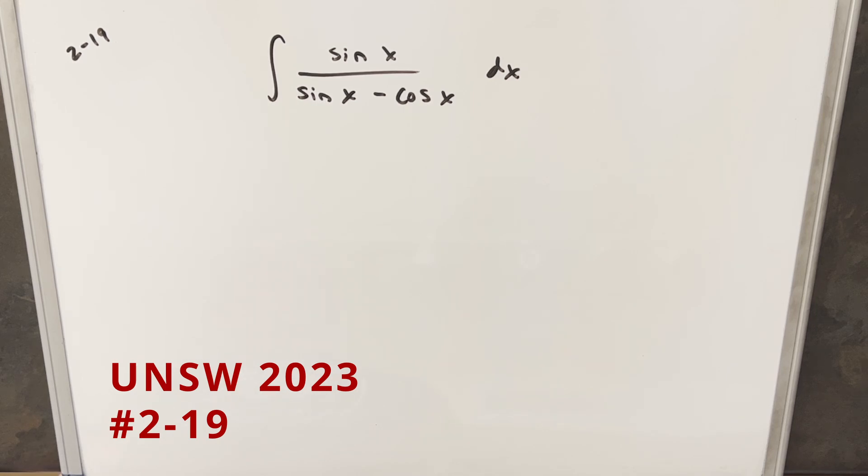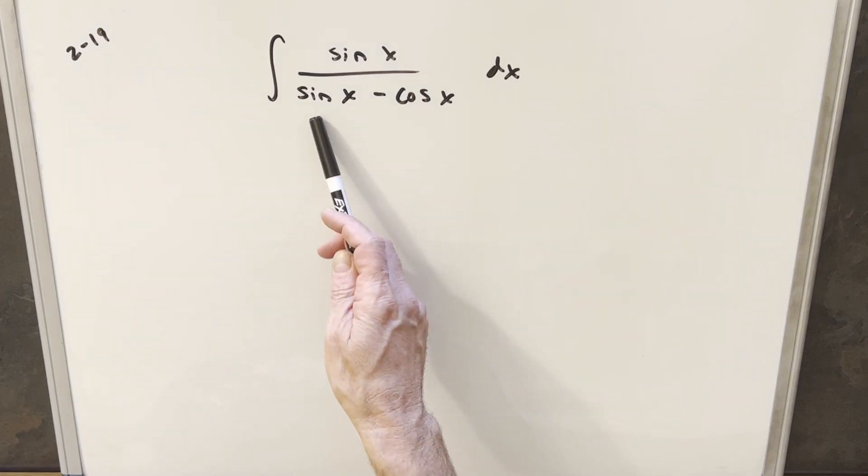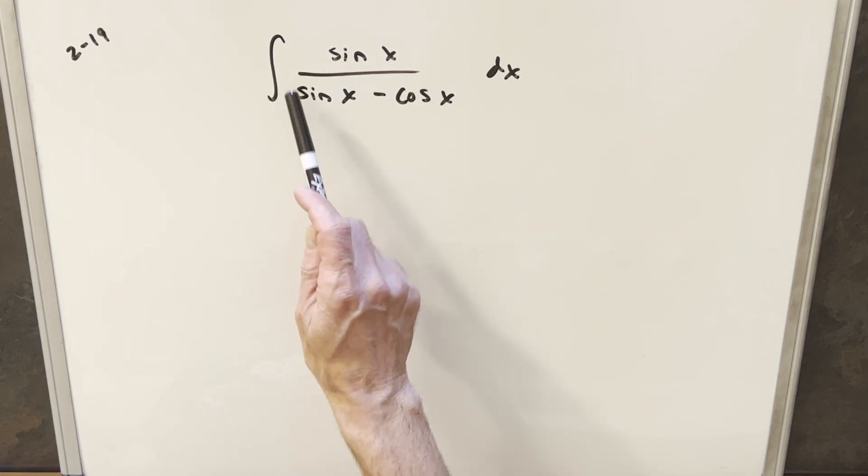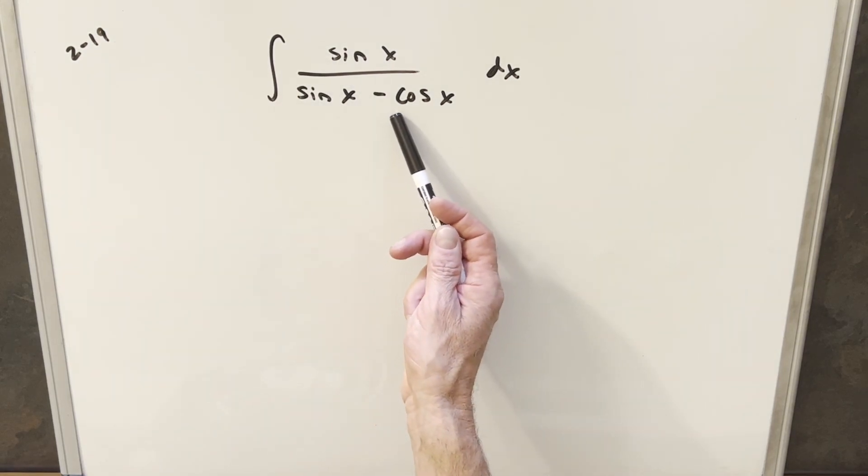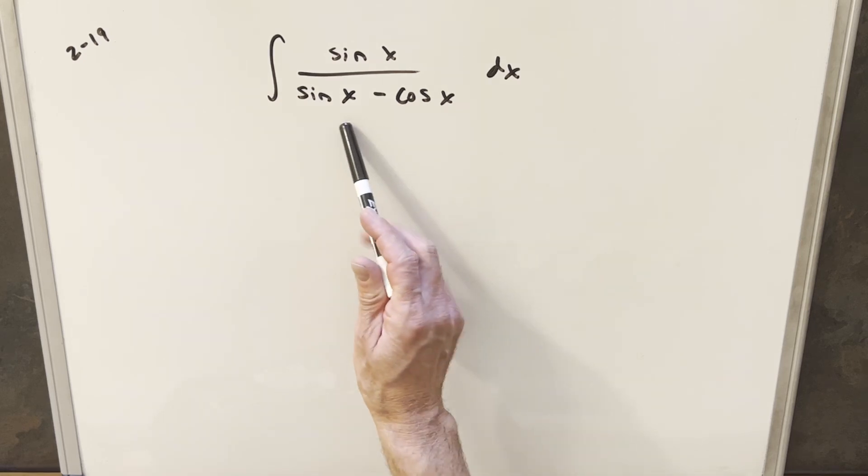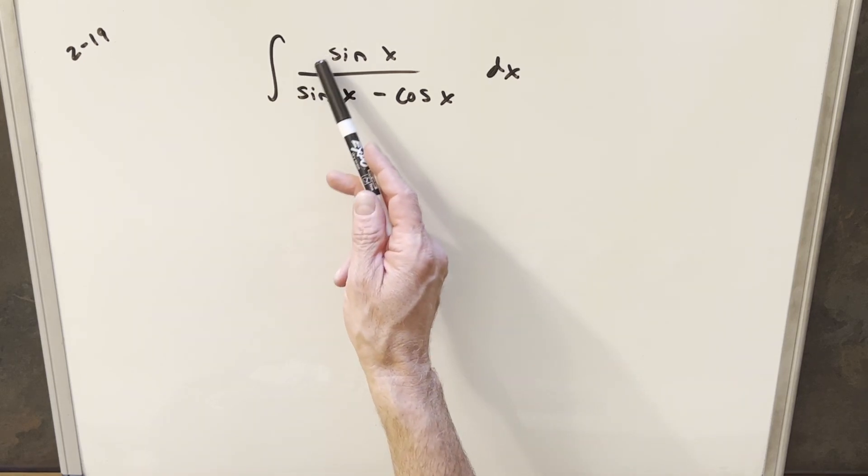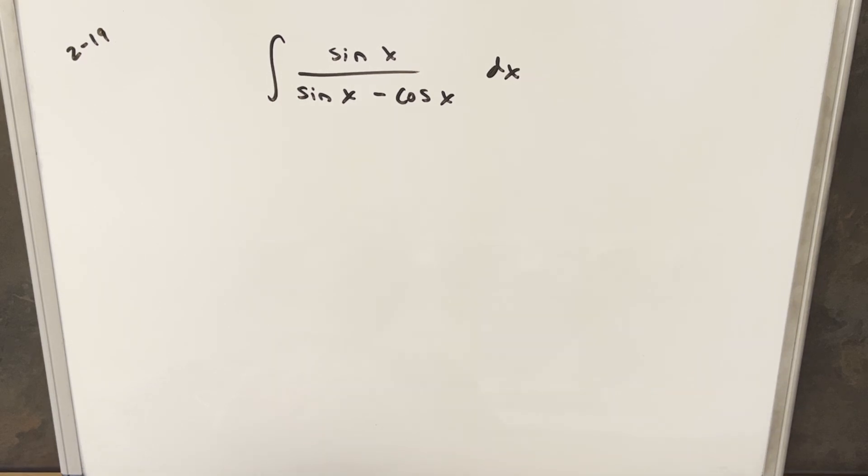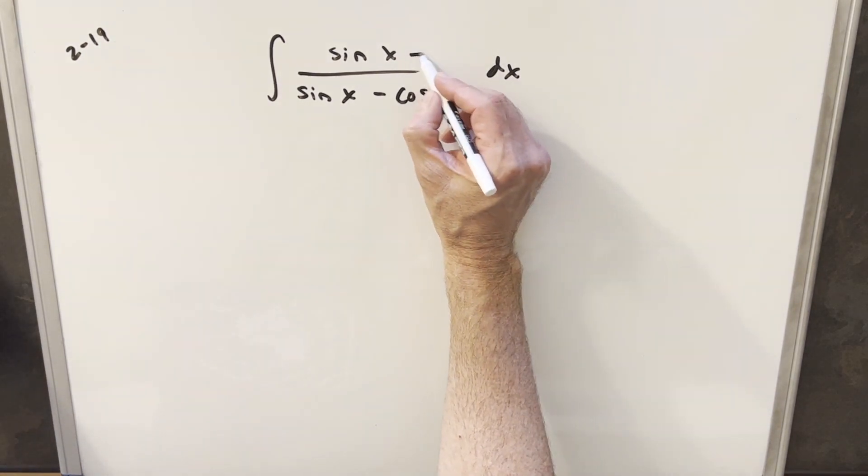We have the integral of sine x over sine x minus cos x dx. I like doing these problems with just sines and cosines, and they kind of helped us out here by having just 1 on the coefficients or negative 1 for all the coefficients. This problem gets a little more tricky if it's like 2, 3, 4, or something. But because everything's 1, I'm going to actually just kind of do this on the fly.